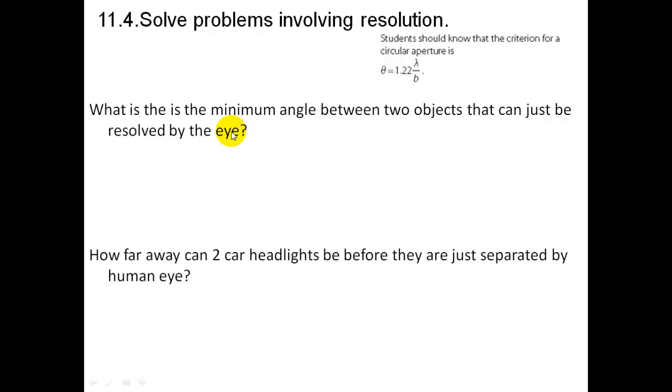Okay, problem is: find the minimum angle between two objects that can just be resolved by an eye. So you need to find out what is the aperture of the eye. And how far away can two headlights be before they are just separated by the human eye? You have to figure out what is the distance between two headlights and how far away can they be.